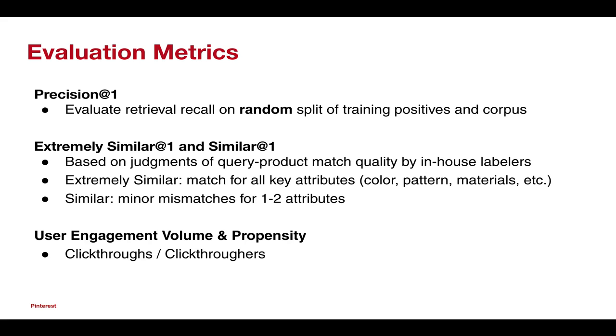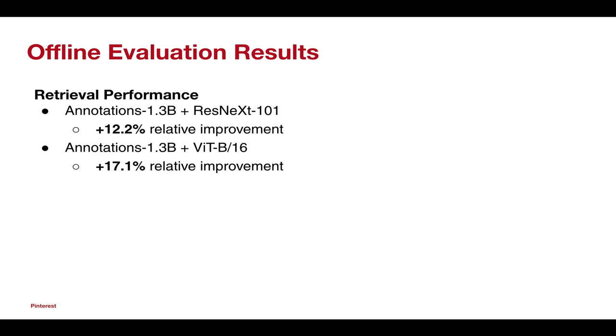We perform an evaluation of precision at one on our offline eval set and conduct a series of end-to-end evaluations to assess the real-world effectiveness of our method. In particular, we ask in-house labelers to assess the attribute match quality of the query product and retrieved products. In addition, we study the online improvements to user engagement volume and propensity in the primary visual shopping product.